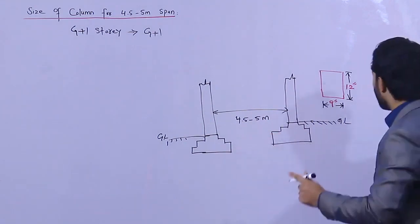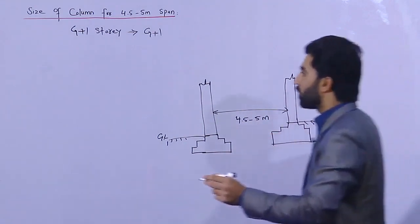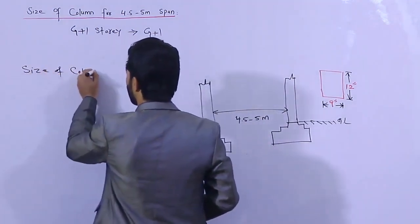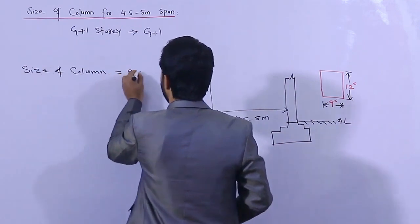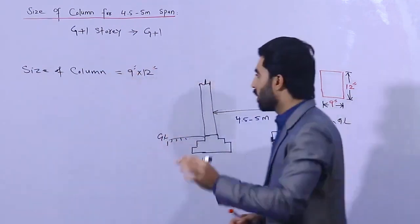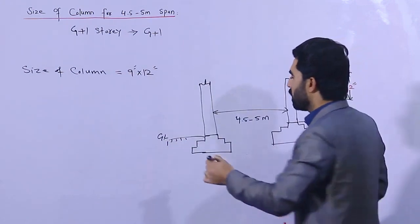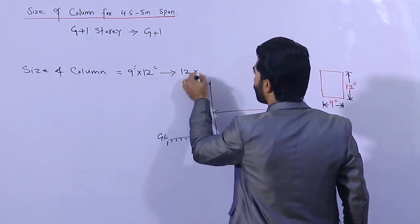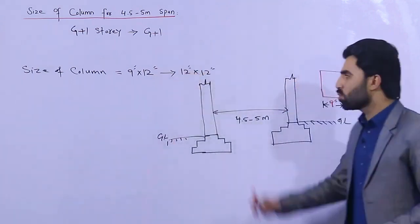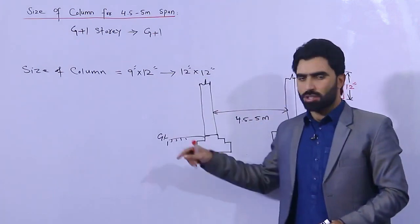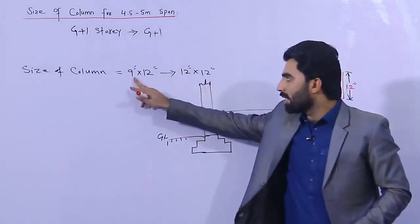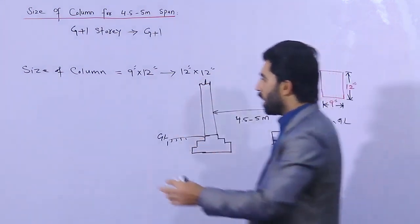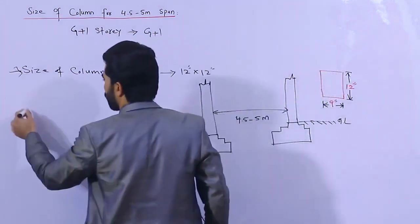This is the span between two columns, or the distance between two columns. Now what should be the steel reinforcement? The size of column should be 9 by 12 inches — not less than this. But if you want to be more safe, you can use 12 by 12 inches. That also works for G plus one, but it depends on the structural load. The minimum is 9 by 12 inches, but you can also take 12 by 12 inches.